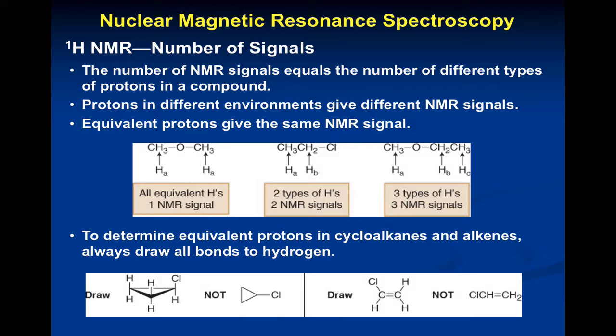If we look at an alkene with chlorine, drawing the abbreviated form wouldn't tell the whole story. Drawing it out: one hydrogen is on the carbon bearing the chlorine, then on the other carbon one hydrogen is cis to the chlorine and one is trans. So we're going to see three signals in this NMR spectrum.